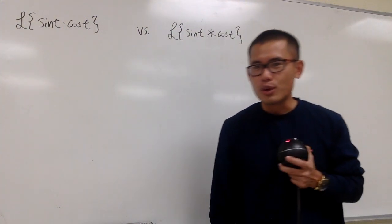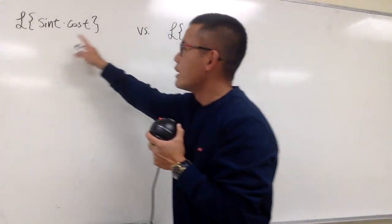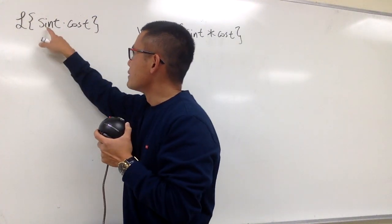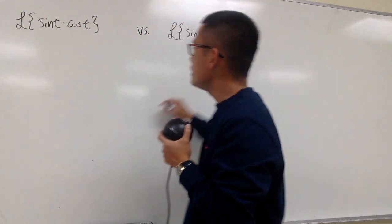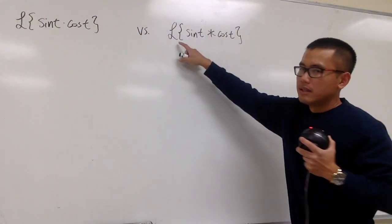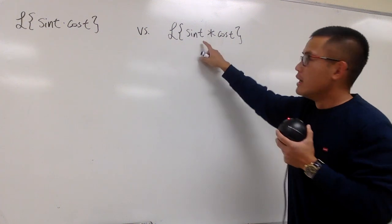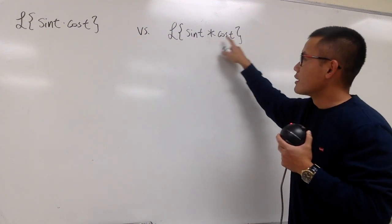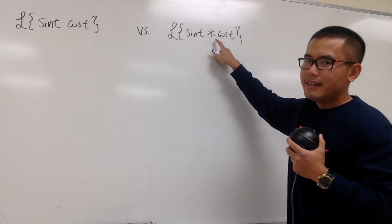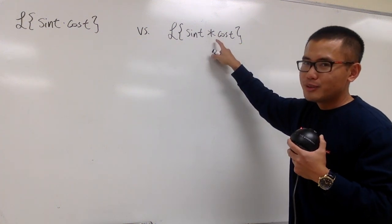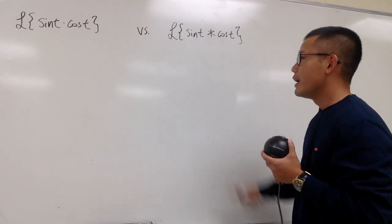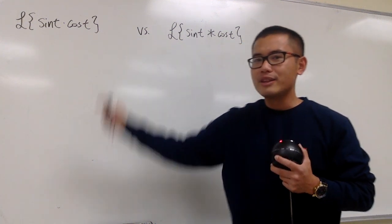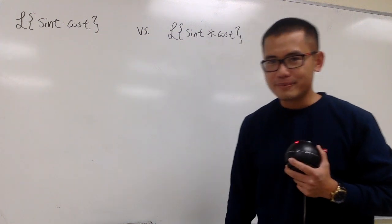I have two Laplace transform questions on the spot. The first one is the Laplace transform of sine t times cosine t, and the second one is the Laplace transform of sine t star cosine t — and this right here is the convolution. Which one do you think is easier?